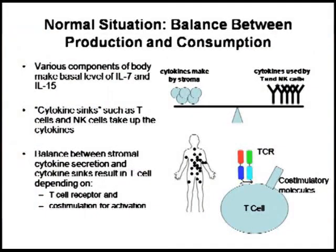How does this work? The idea is that the immune system — and there are numerous publications talking about this — the immune system regulates the number of lymphocytes it has in circulation. It's like a balance. In the normal situation, there are chemicals, cytokines, being made by various cells of the body like the stroma. They produce interleukin-7 and interleukin-15 at a constant rate, which gets absorbed or sucked up by lymphocytes — called cytokine sinks. T cells and NK cells have receptors for these cytokines, and there's a balance. When you have this balance, to activate a T cell requires two signals.